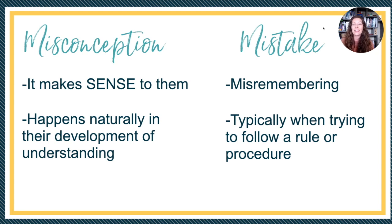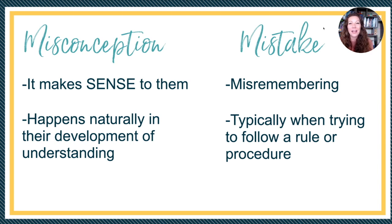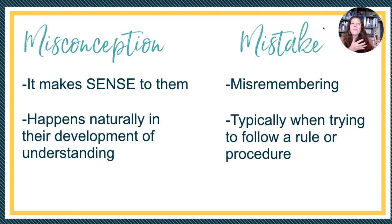For example, sometimes when I see four times three I think seven, just because I see four and three and I think that makes a seven because I added instead of multiplying. That's a mistake. That is not something based in my understanding of mathematics — and that's when misconceptions differ.